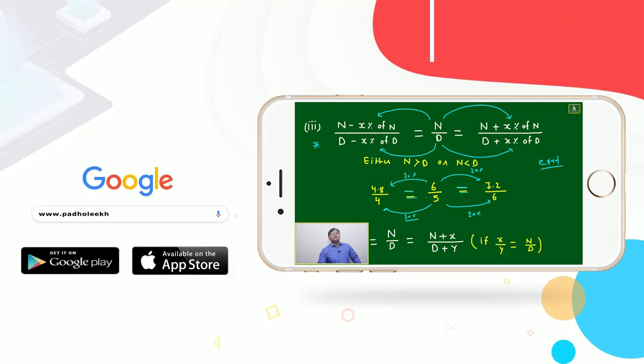Six by five will always equal seven point two by six, and this will always equal four point eight by four. Because the multiplication factors are changing the same for numerator and denominator, they will cancel out.